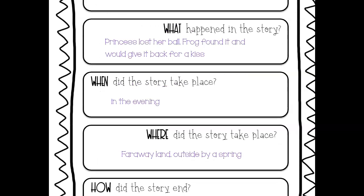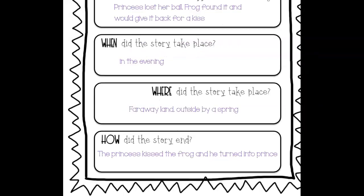Our next one is the H — how did the story end? The problem was she lost her ball and it made her very sad; she was in despair. The frog found it, and the princess promised she would give him a kiss if he got the ball back. When she kissed him, he turned into a prince. So the story ended with the princess kissing the frog, he turned into a prince, they became friends, and when they grew up they got married. Very good. Now we're going to read The Three Little Pigs and you're going to try doing this on your own.